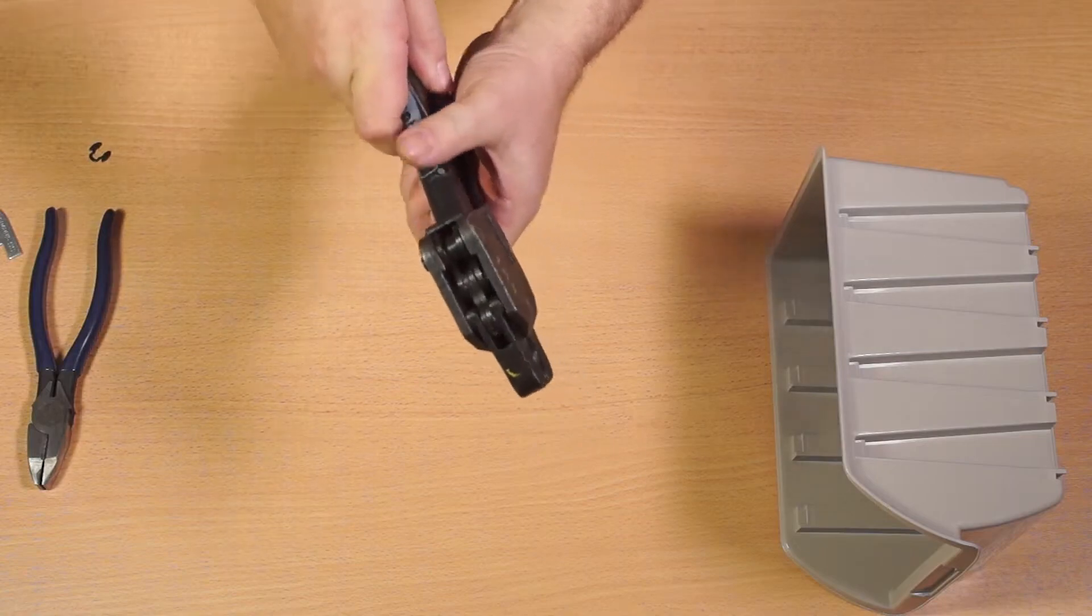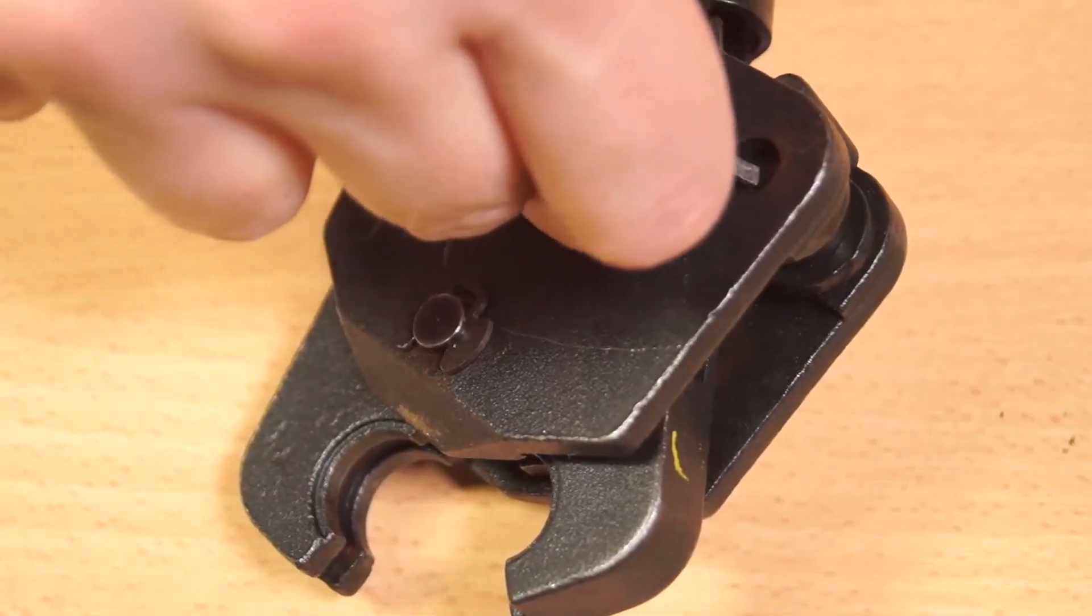Pull back on the moving handle to open the jaws. Push the adjustment pin out just enough so you can grab it with your fingers or the pliers.